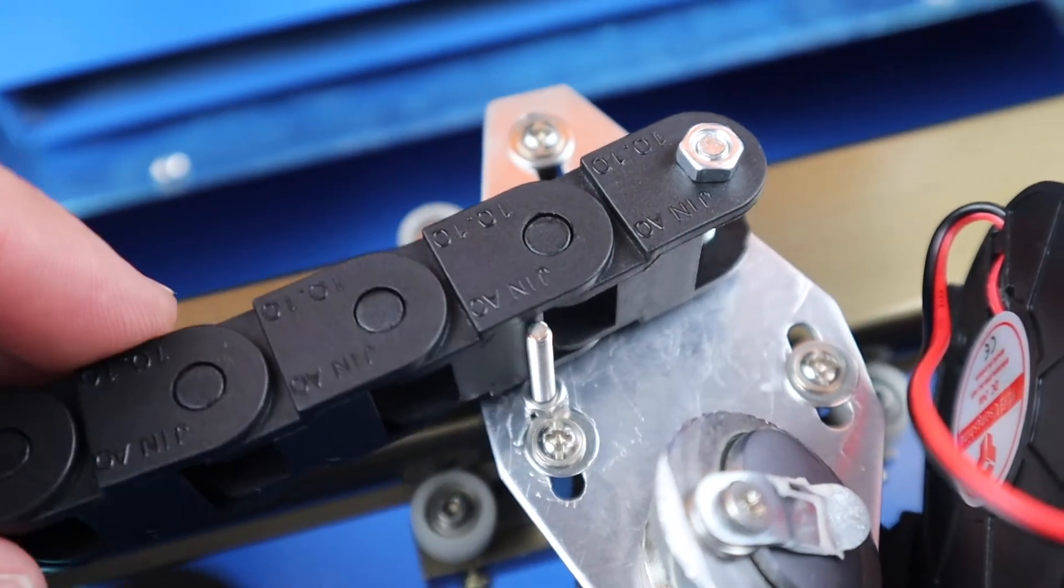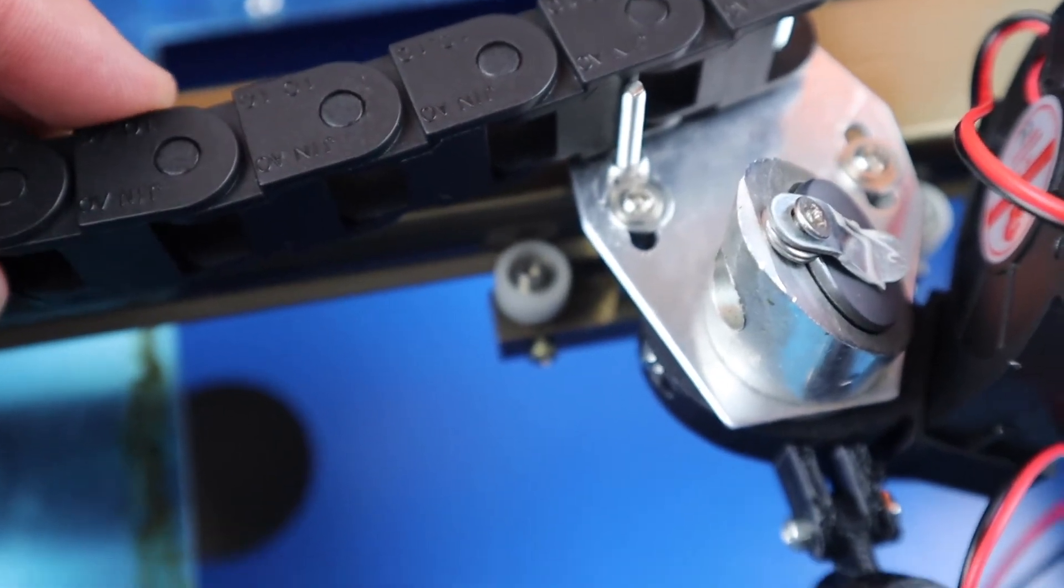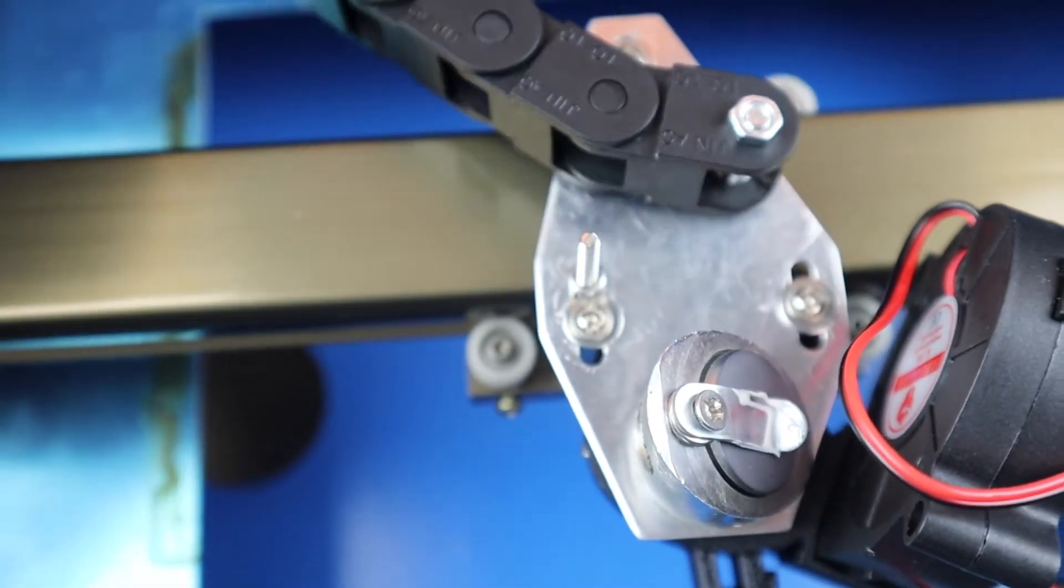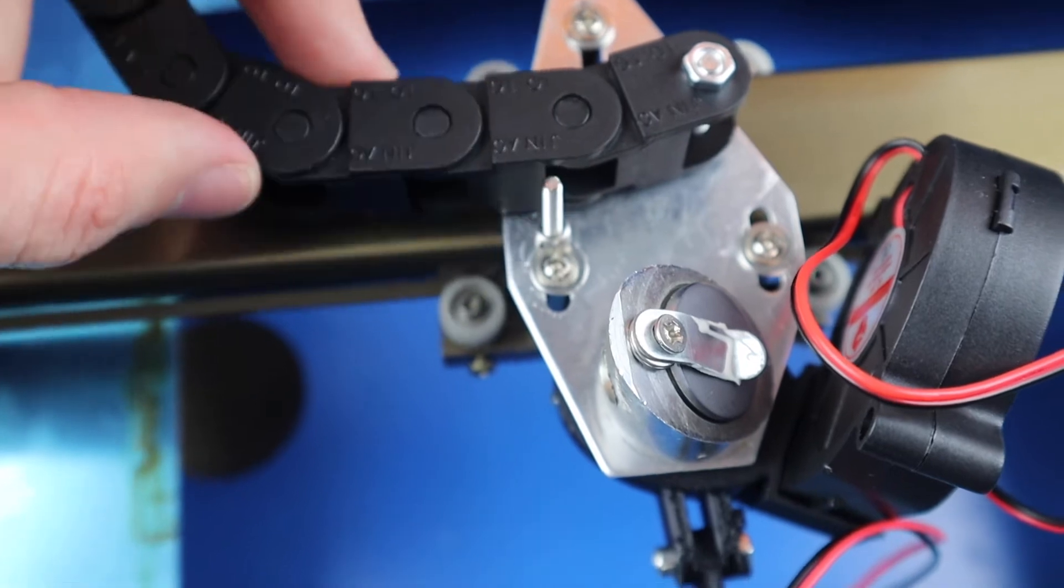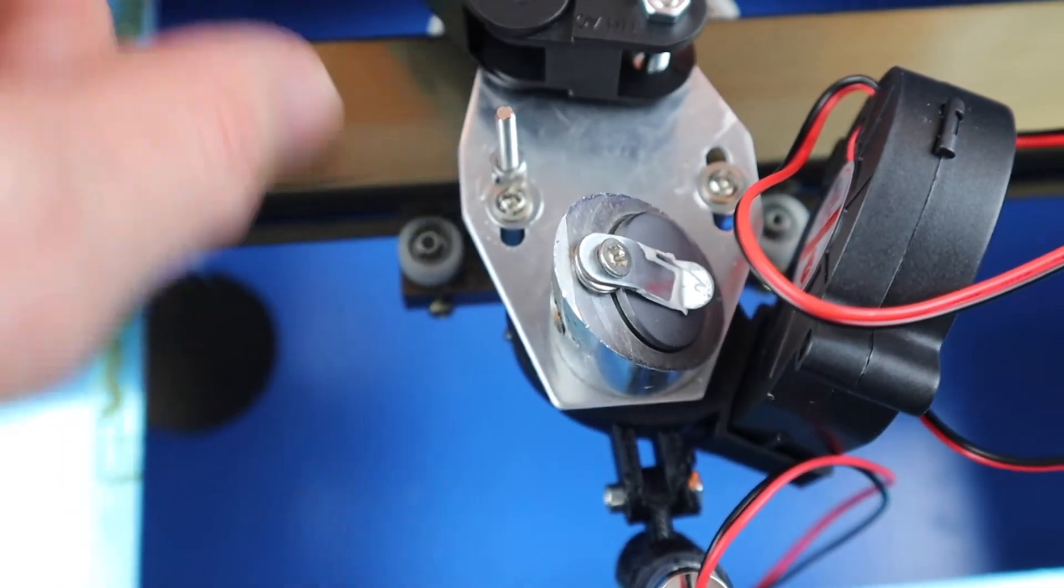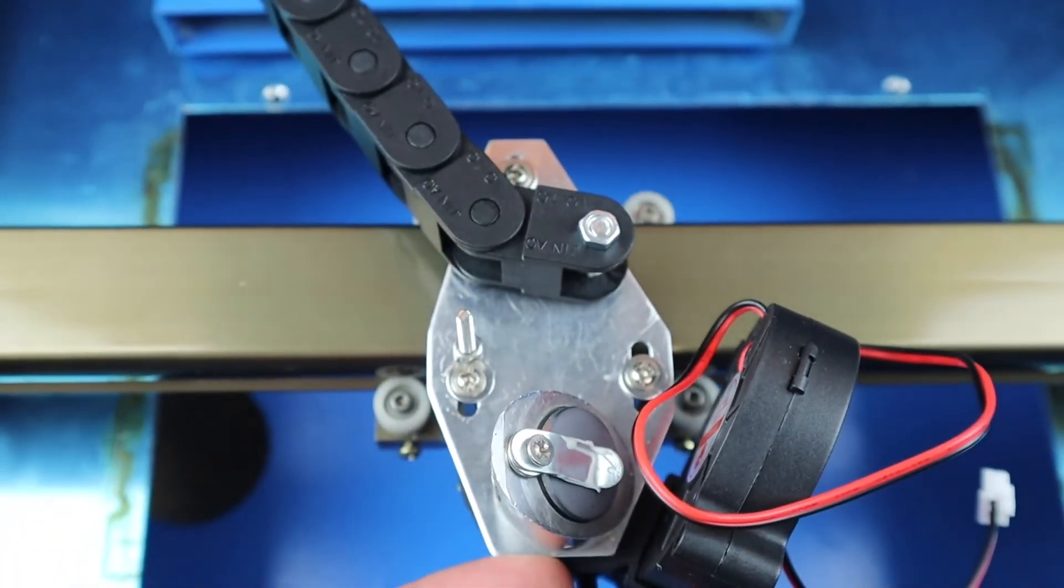You might also want to add a thin screw or rod onto the head to stop the drag chain from being able to move into the path of the laser. This will interrupt the laser's path, causing your cut to fail and potentially damage the drag chain or cause it to catch on fire.